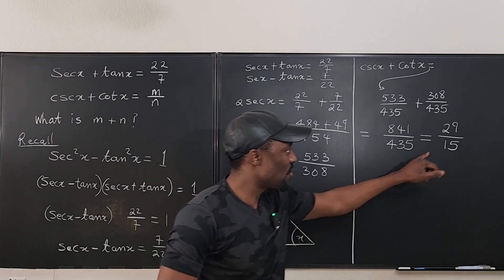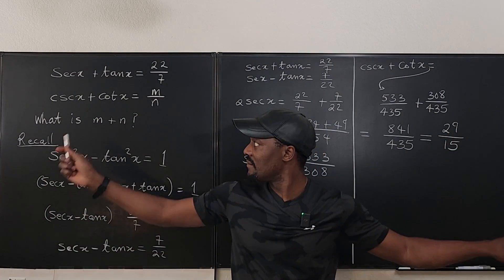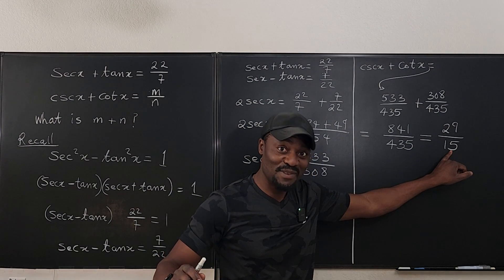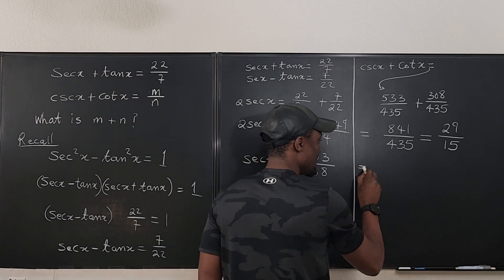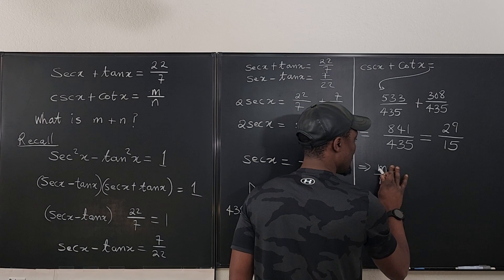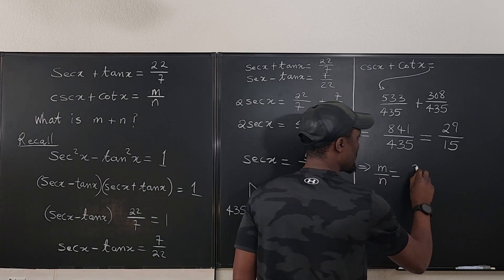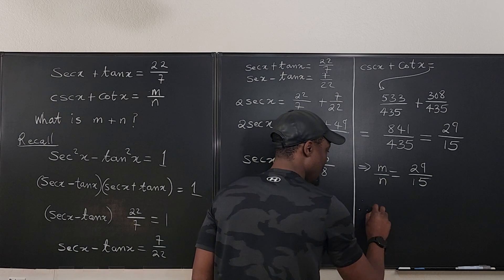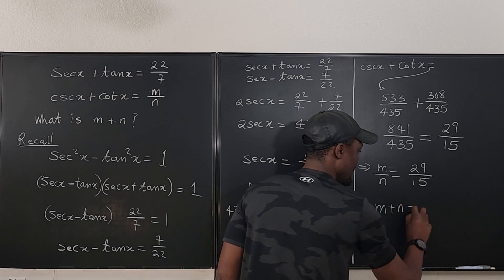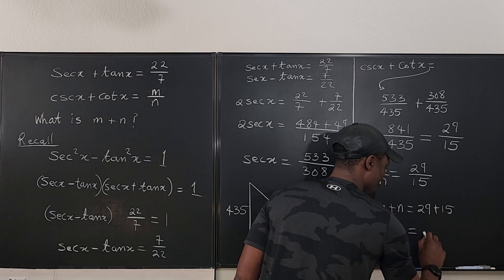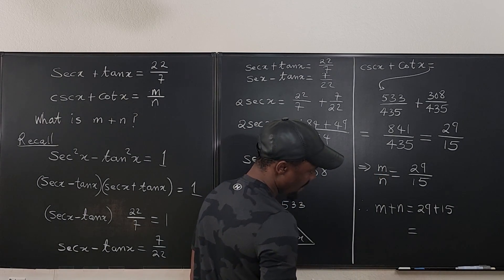And this implies that your m is nine, I mean, it's 29 rather. And n is 15. So this implies m over n. Let's write it this way. Equals 29 over 15, such that m plus n is 29 plus 15, which is equal to, what's that? 44.